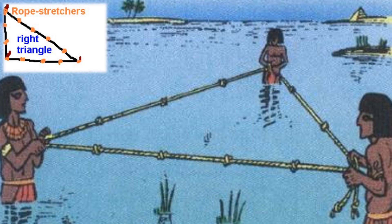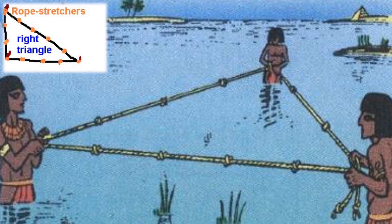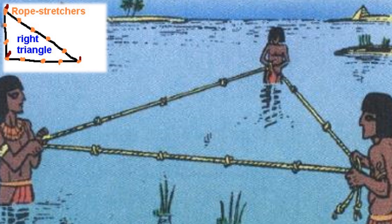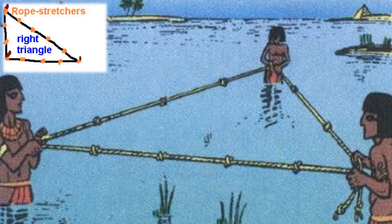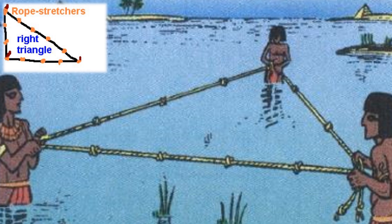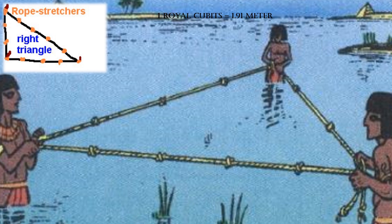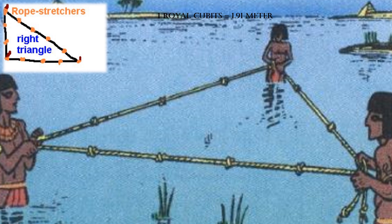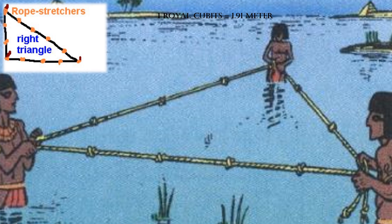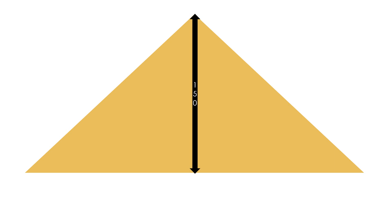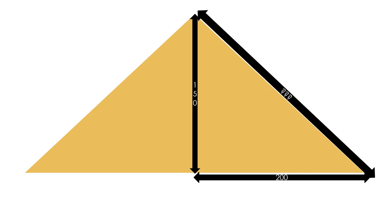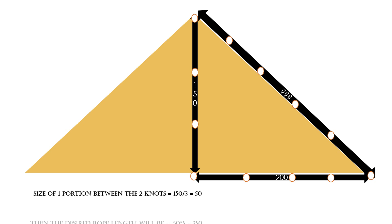Knotted ropes were used by the rope stretchers, who measured out the boundaries of fields in ancient Egypt. The knotted ropes were 100 royal cubits in length with a knot every 10 royal cubits. The rope stretchers would stretch the rope in order to keep the measurements uniform. For example, suppose Egyptians were creating a pyramid and they had a mechanism to pull stone through a rope already in place — to get the length of rope needed to pull the stone to the top of the pyramid, they might have used this method.